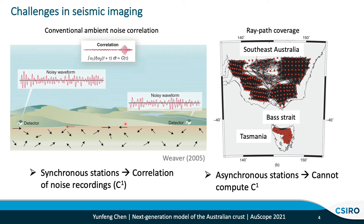However, this is often not true for station deployment in Australia. For example, in Southeast Australia, there were many temporary networks. With the conventional ambient noise correlation method — or the C1 method — we can mostly recover the ray-paths for stations within the same networks. However, for those from different networks, we cannot recover their ray-paths because those stations were deployed at different times. For example, for networks deployed in Southeast Australia and those deployed on the Tasmanian islands, there are no ray-paths directly connecting these two regions, which imposed some challenges to the existing ambient noise imaging workflow.